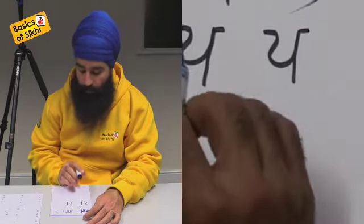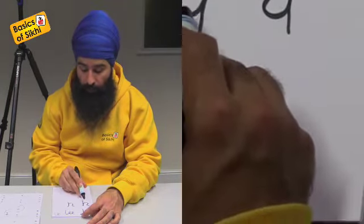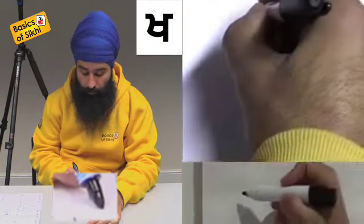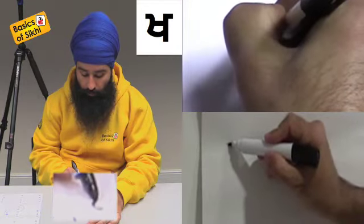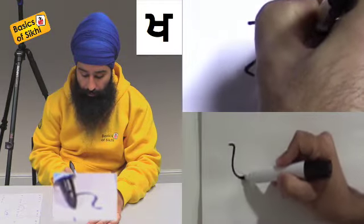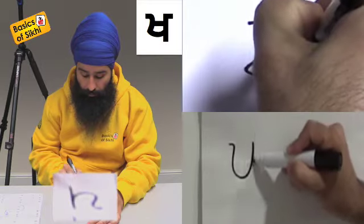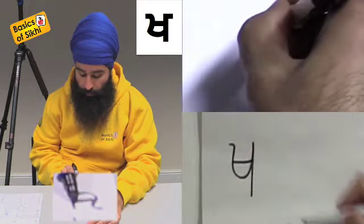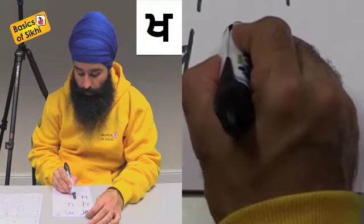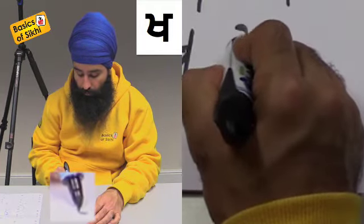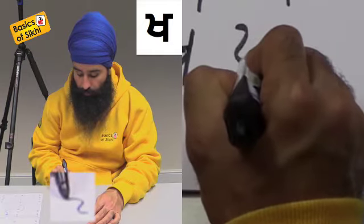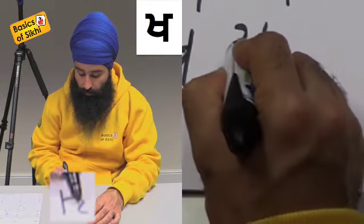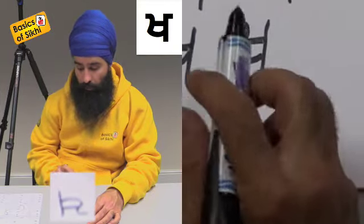Now, the next letter is very similar to this Papa. This is Kakha, like Kakha for Khalsa. We're going to go like that, go around like this, exactly the same as Papa. But then, after we've done this shape, we're going to go from here that way, and then put a line in between. Some people will stop here, then go straight down, and then go like that. That's fine as well.